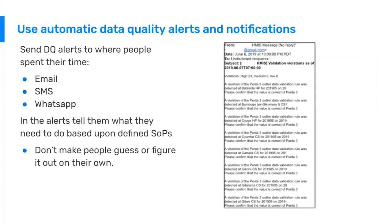When we send the alerts and notifications, we need to make sure that we're sending them to where people spend their time. We often see that users of DHIS-2 are not spending a lot of time looking at their DHIS-2 dashboards. Most people nowadays are spending much more time looking at their email, checking SMS or WhatsApp messages. We can send the alerts and notifications directly to where the users are spending their time — their email or as an SMS.